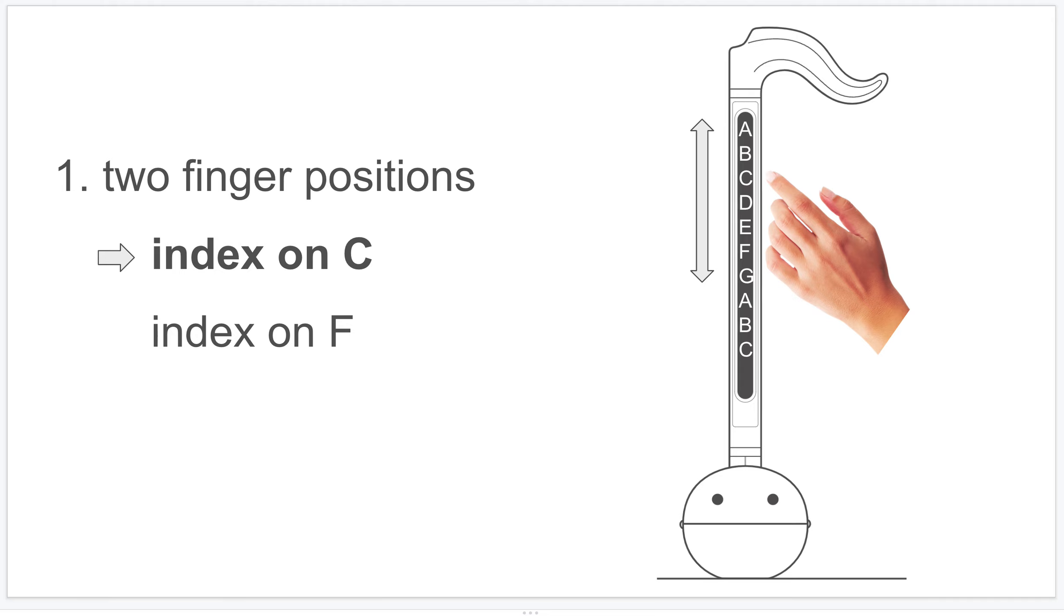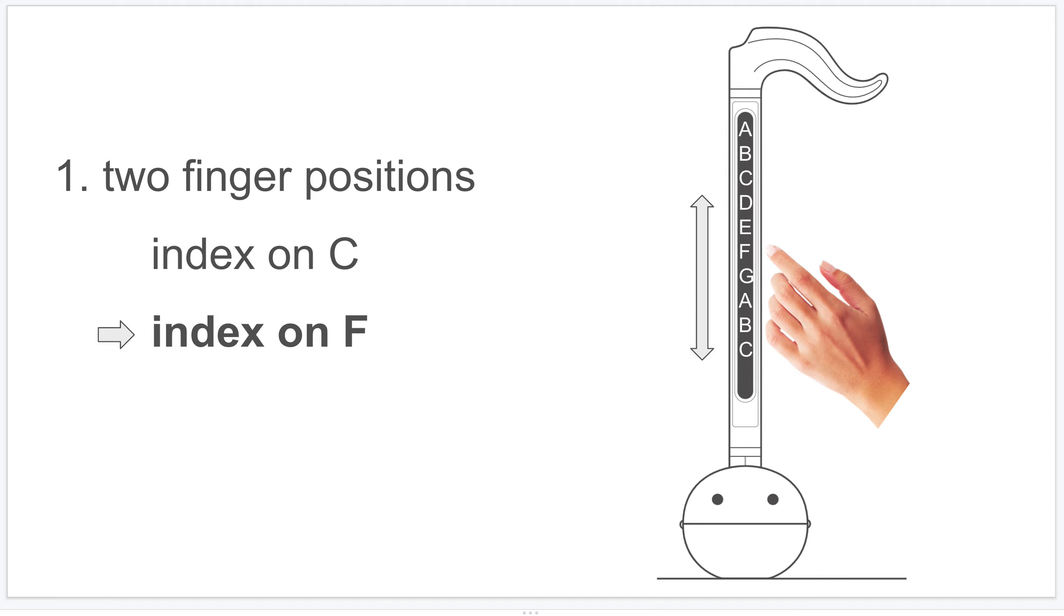To get the A and B, I shift the index finger up. To get the G note, I shift the pinky down one note. And the next finger position, or hand position, is to have the index finger on the F note. Naturally, the pinky is on the high B.